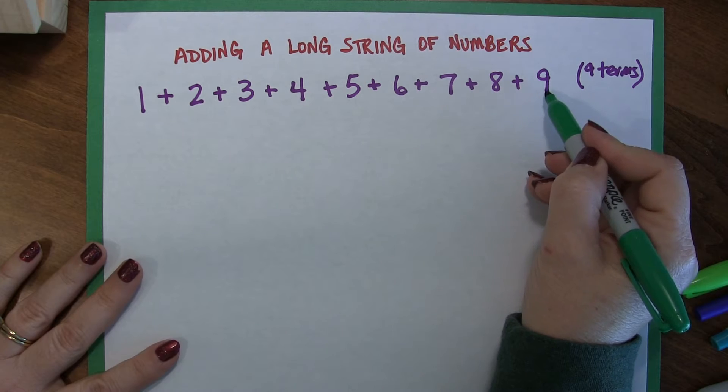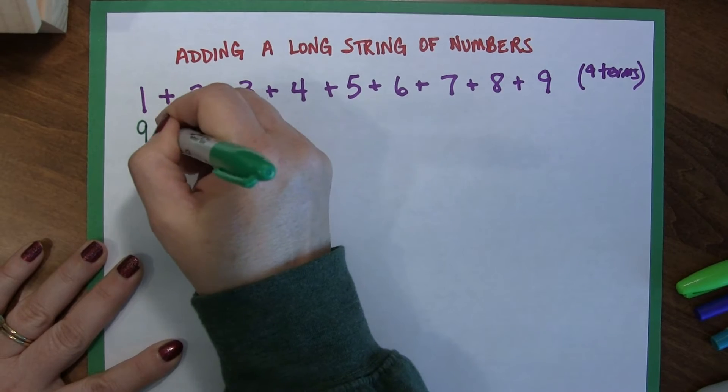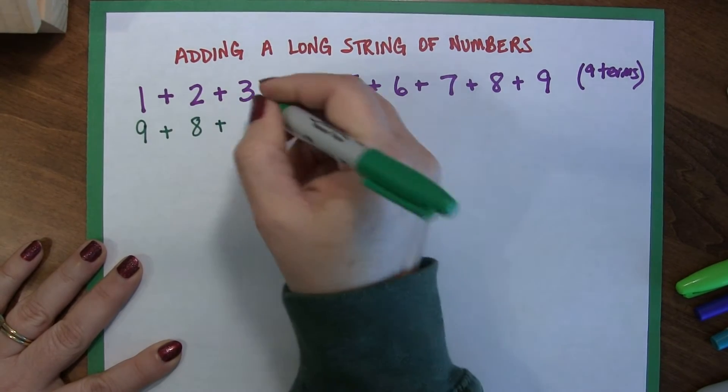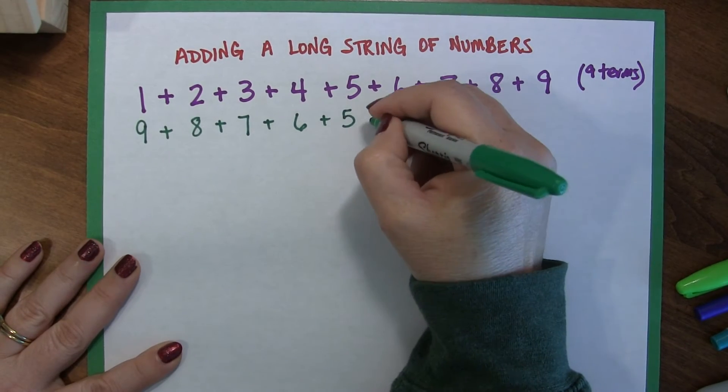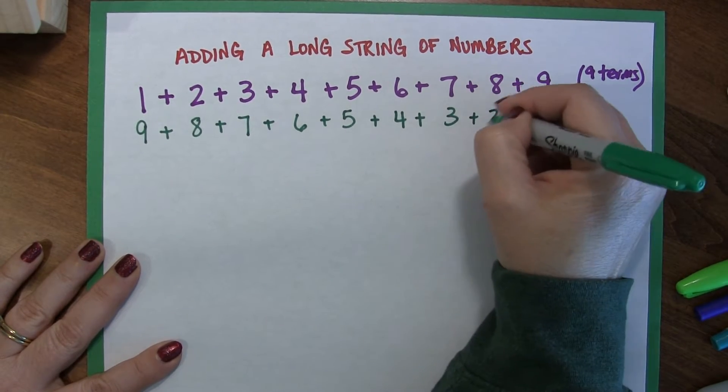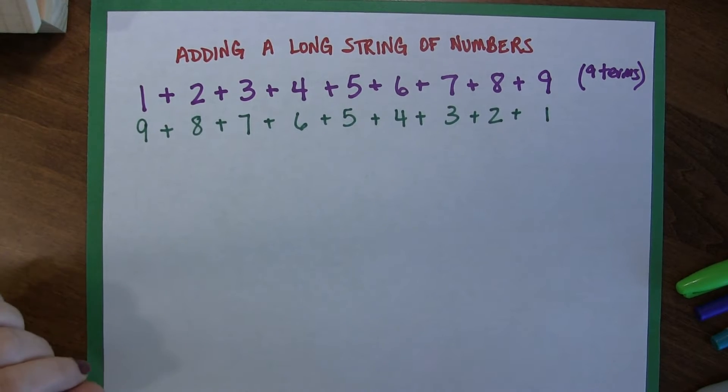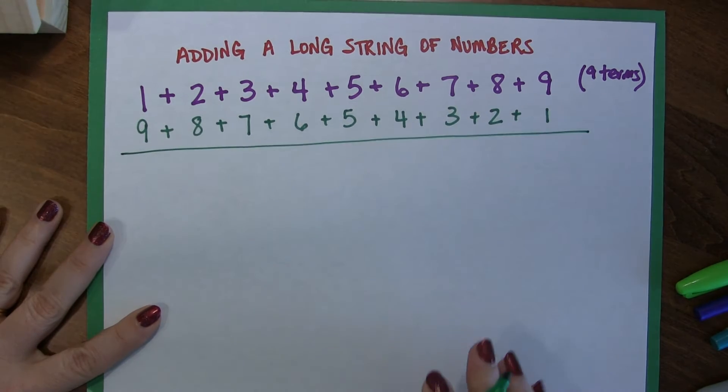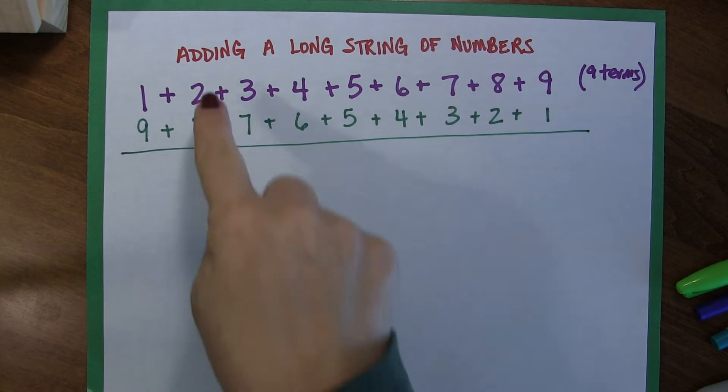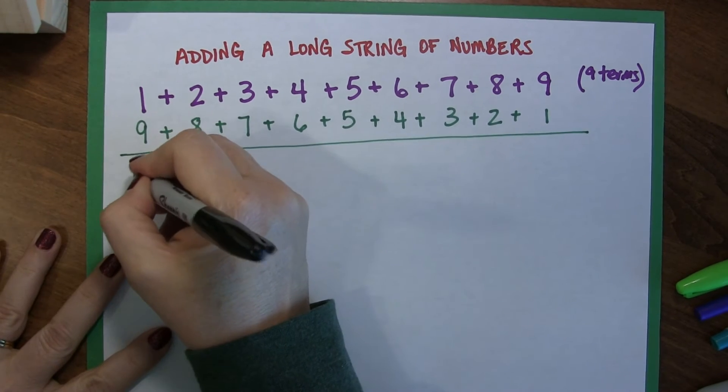So, what I'm going to do here is I'm going to take this same string of numbers and I am going to rewrite my equation backwards. So, I'm going to start counting down from 9. So 9 plus 8 plus 7 plus 6 plus 5 plus 4 plus 3 plus 2 plus 1. Now you're saying to yourself, self, why did she do that? It's going to be the same answer either way. I know, I know, I know, this is actually going to make life better. Because what I'm going to do is I am going to add these two equations together and you will see something start to happen.